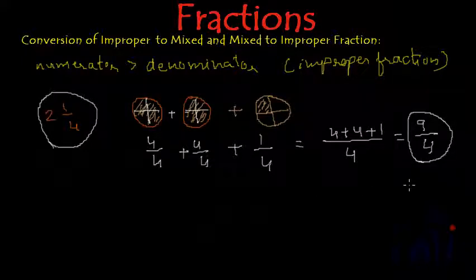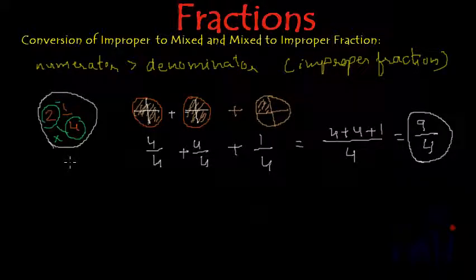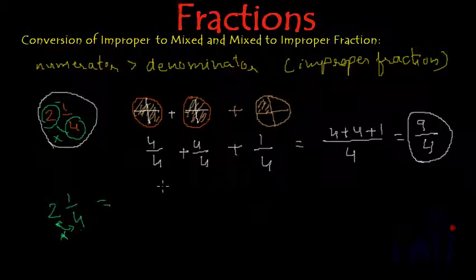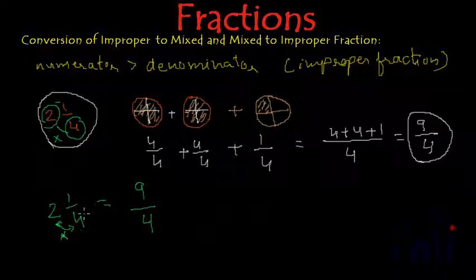Let's verify using our method: for 2¼, multiply the whole number 2 by the denominator 4 to get 8, then add the numerator 1 to get 9. The denominator remains 4, giving 9/4 — the same result. So multiplying the whole number by the denominator and then adding the numerator gives us the correct improper fraction.